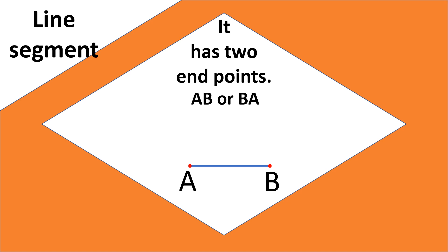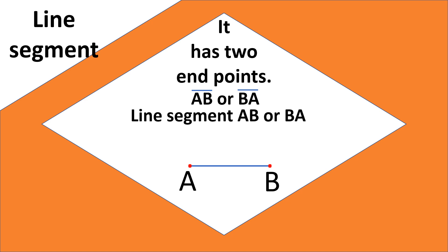AB or BA are two representations of a line segment, and we use the line segment sign above them. We read it as 'line segment AB' or 'line segment BA' — both are the same thing and have the same length: line segment AB equals line segment BA.